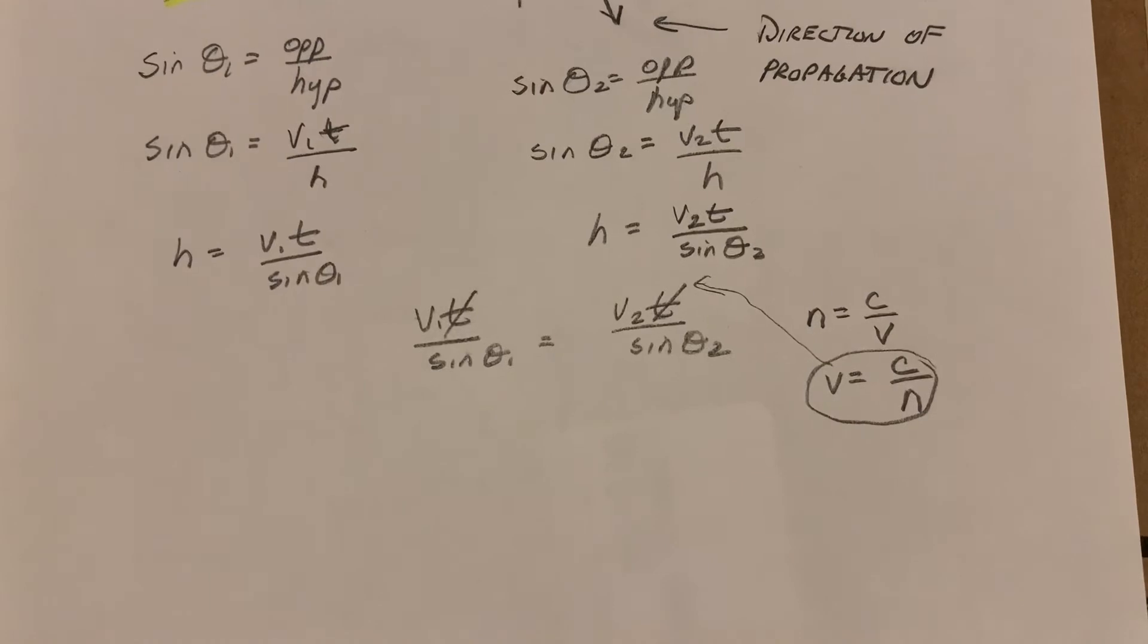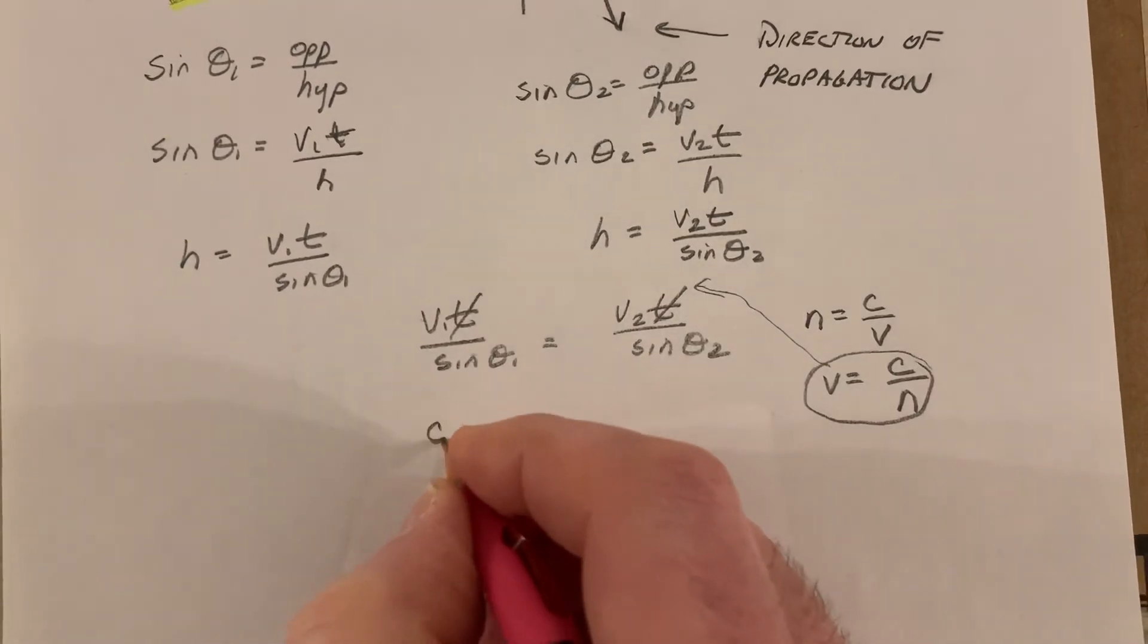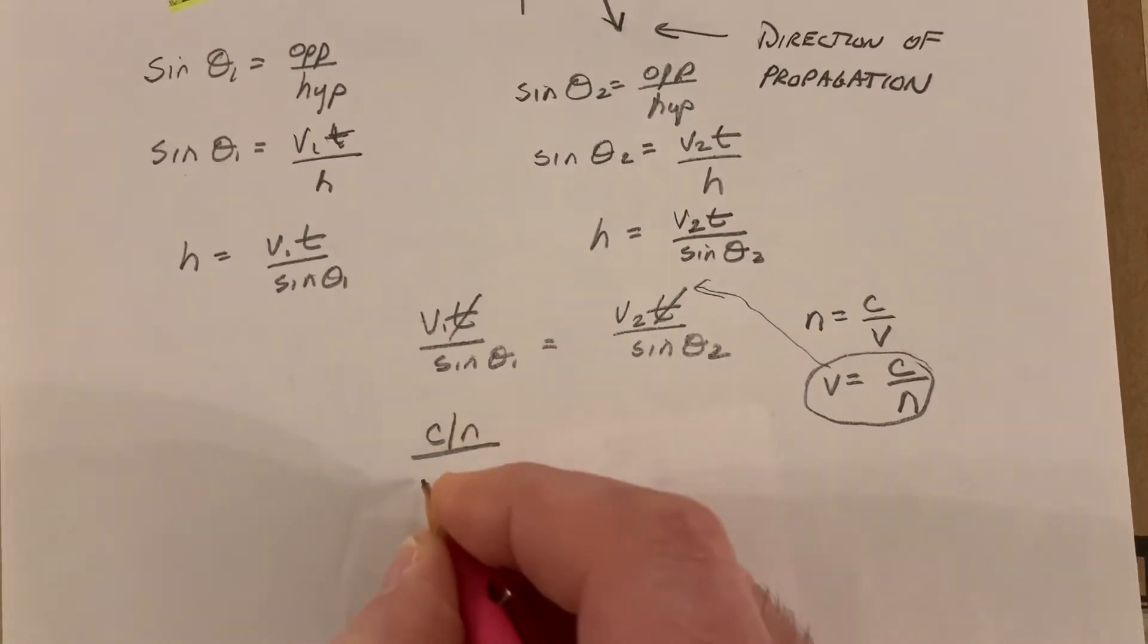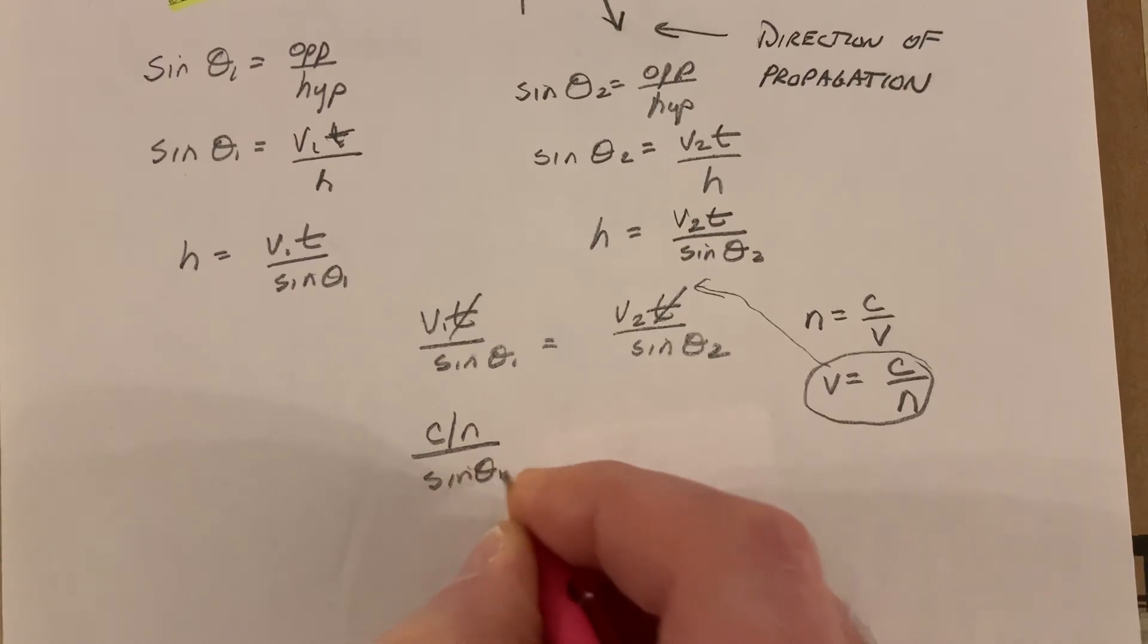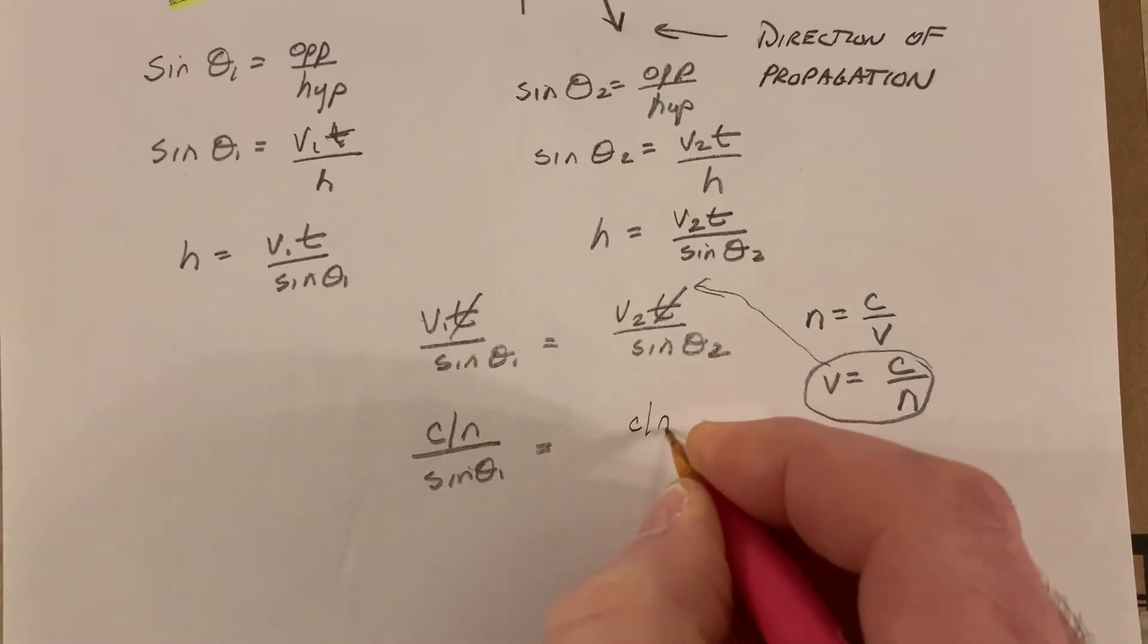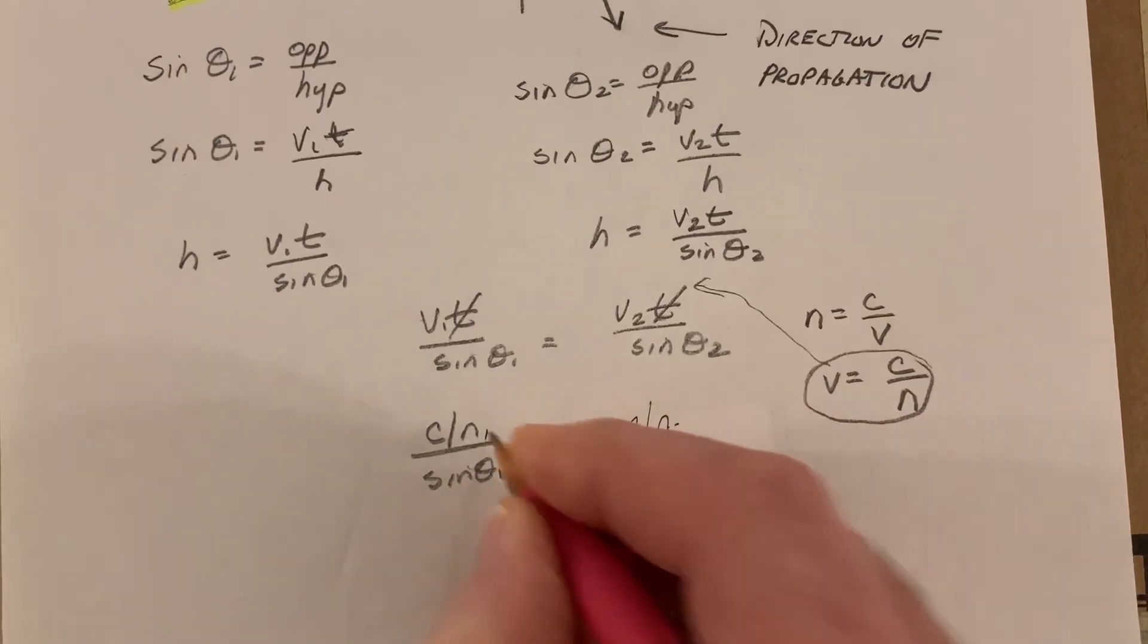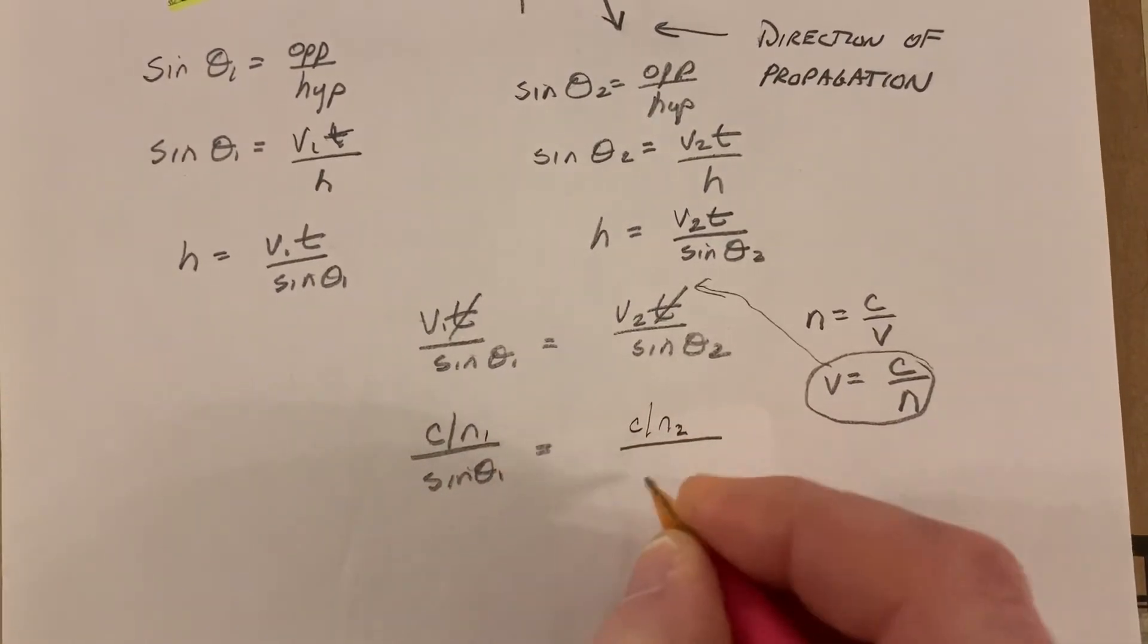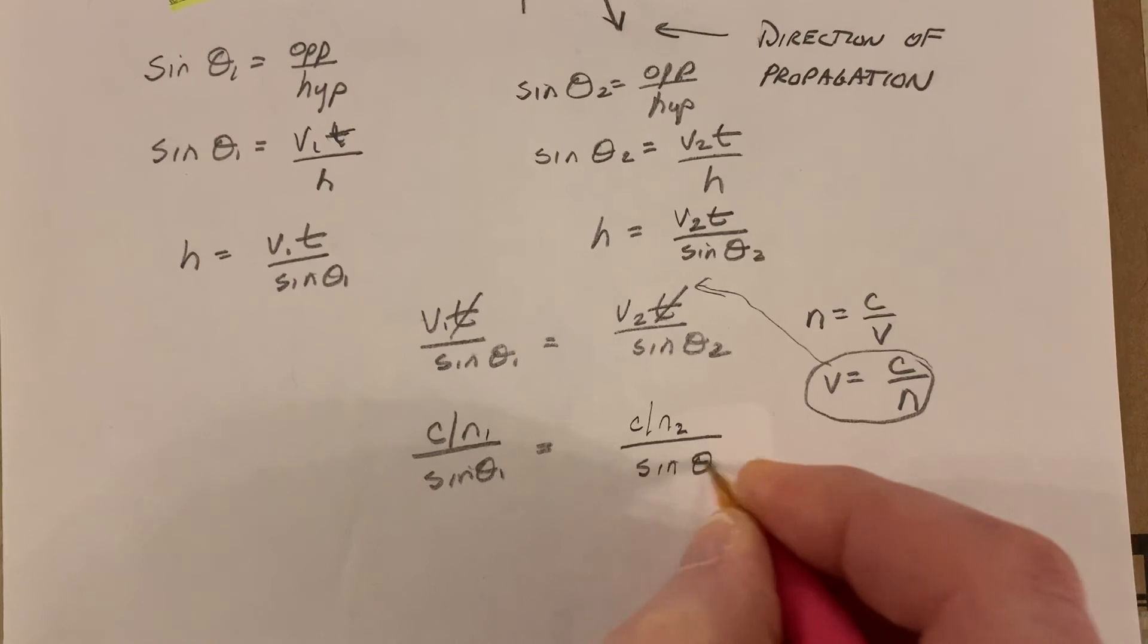So, here we go. c over n divided by sine theta 1 is equal to c over n, and that should be n1, by the way, n2 over sine theta 2.